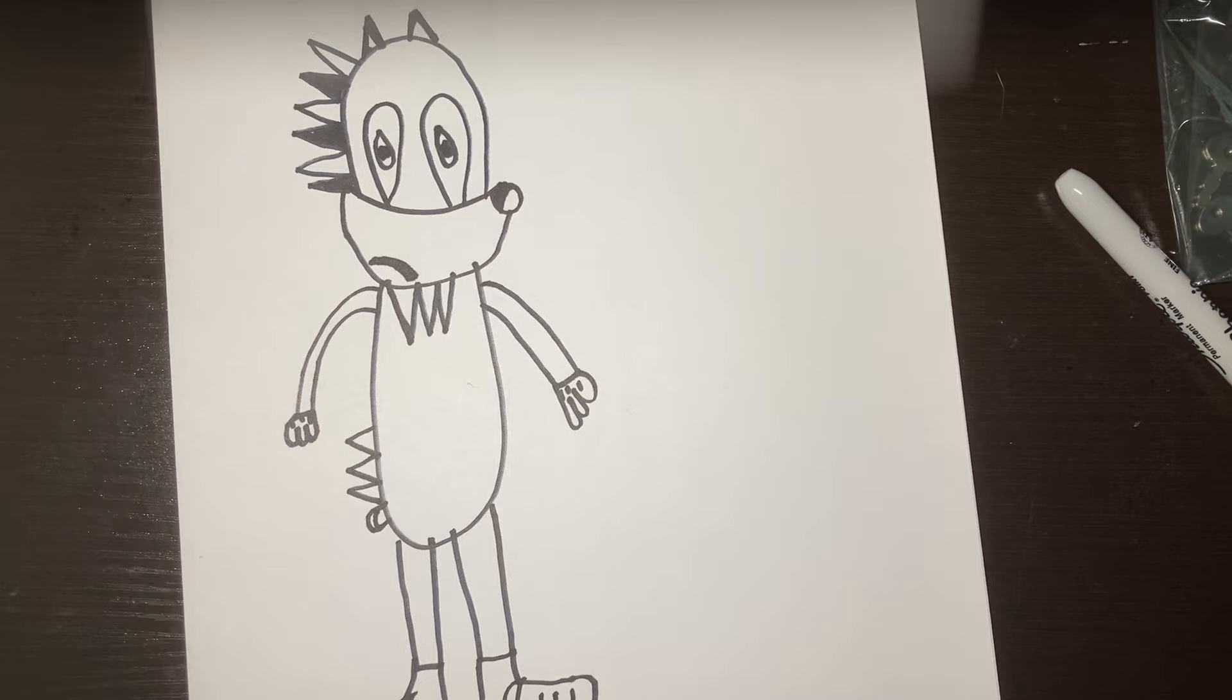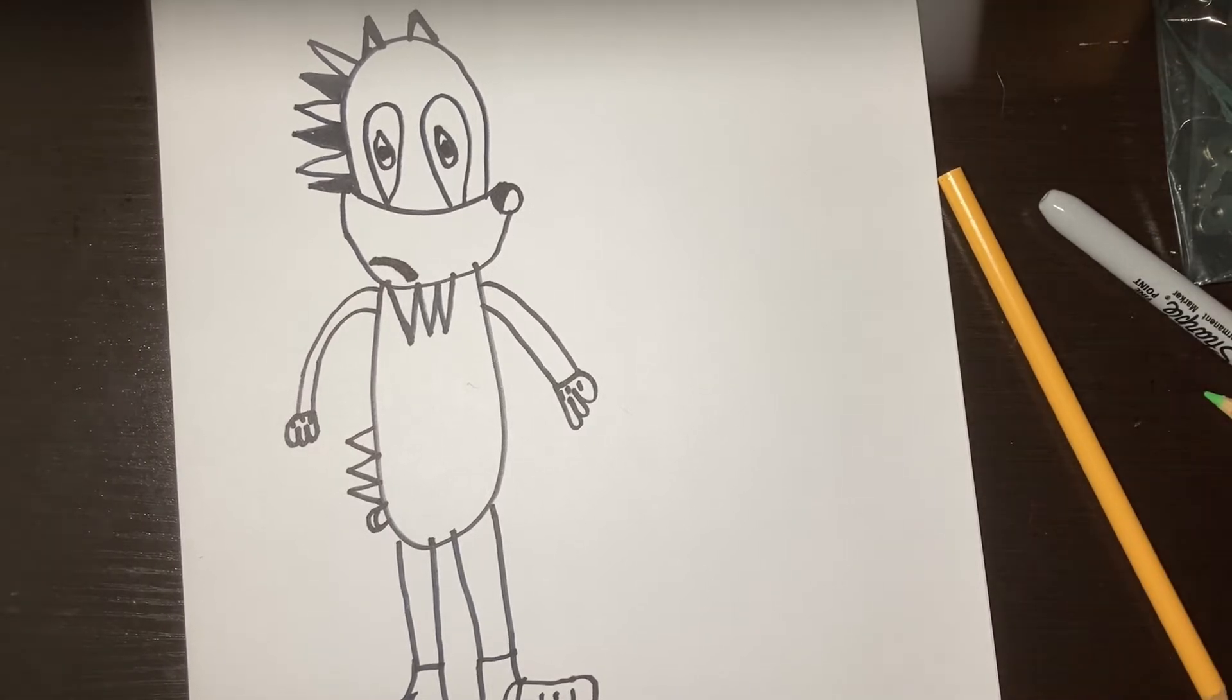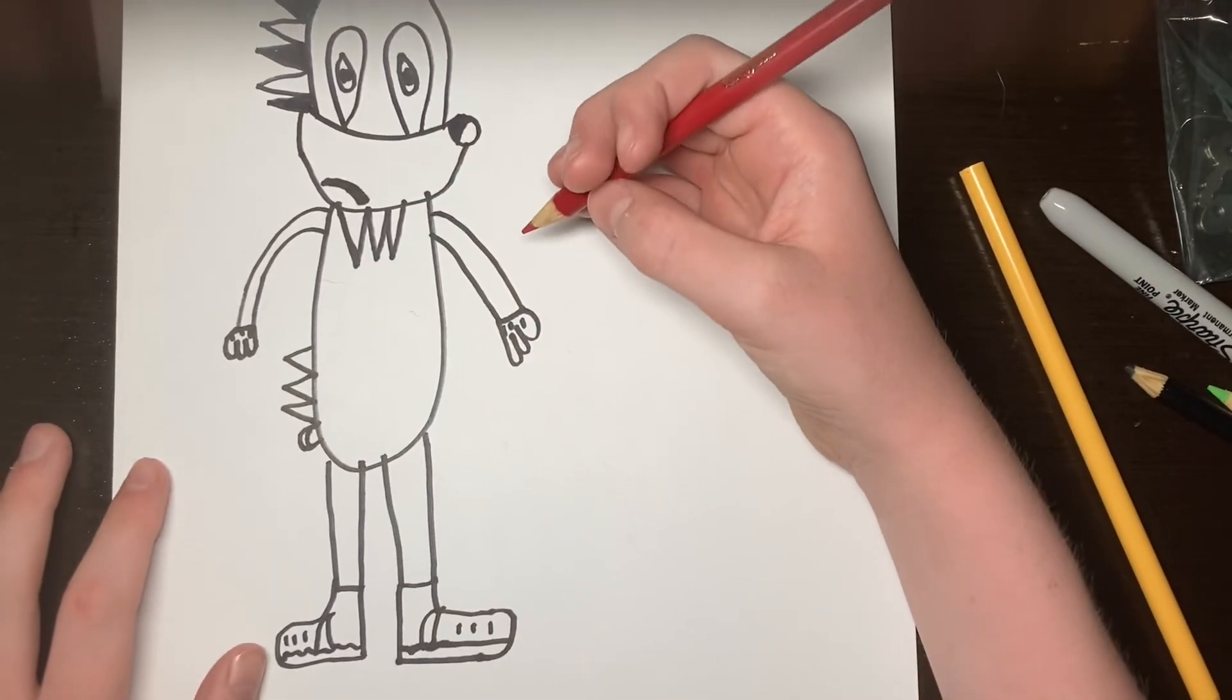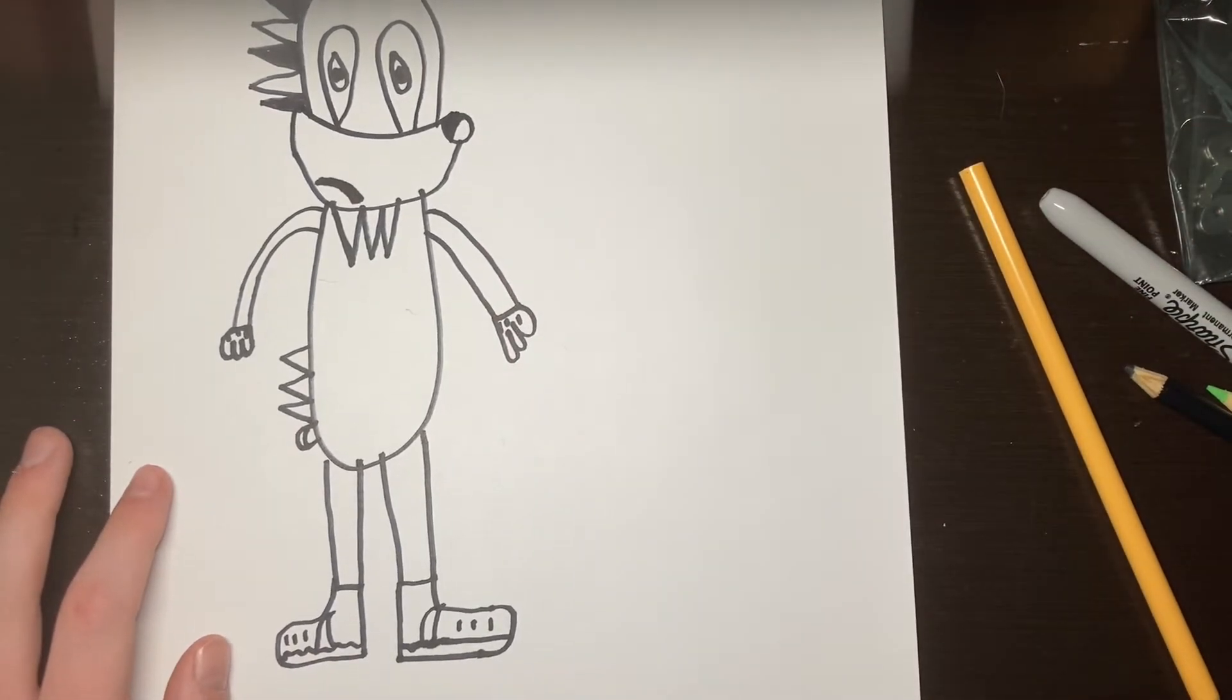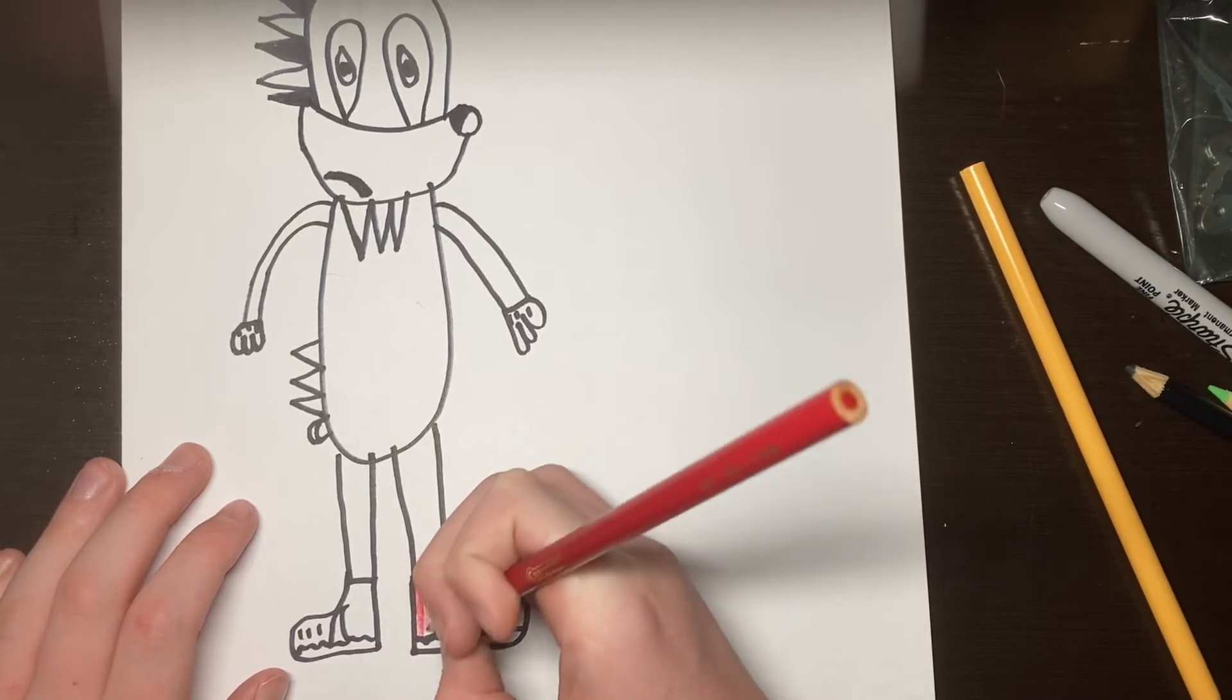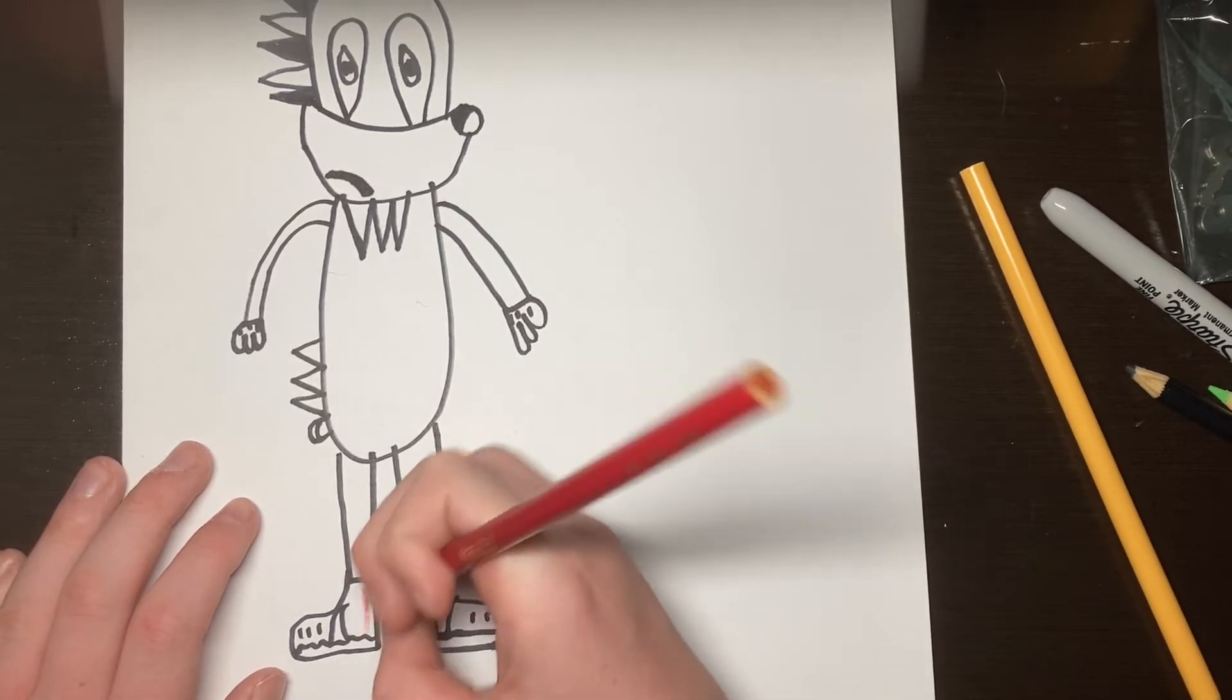I'm just doing on the floor. We have to get the color yellow. You draw his shoes red right here. Same thing on the other side.